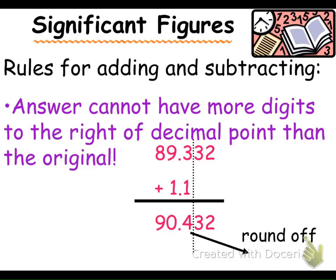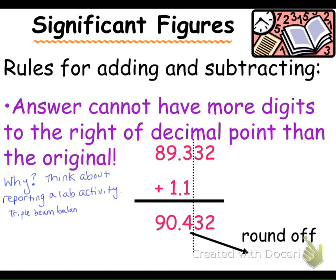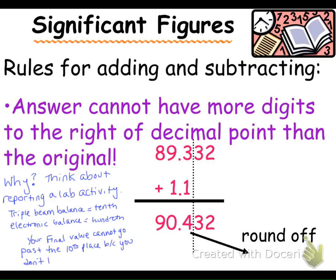We've got some rules for adding and subtracting and multiplying and dividing significant figures. For adding and subtracting, the answer cannot have more digits to the right of the decimal point than the original. Why is this important? If you're using two different types of measuring devices — say a triple beam balance, which measures to the tenths place, and an electronic balance, which measures to the hundredths place — if you add those values, your result cannot go past the tenths place because you don't know what that final digit is.